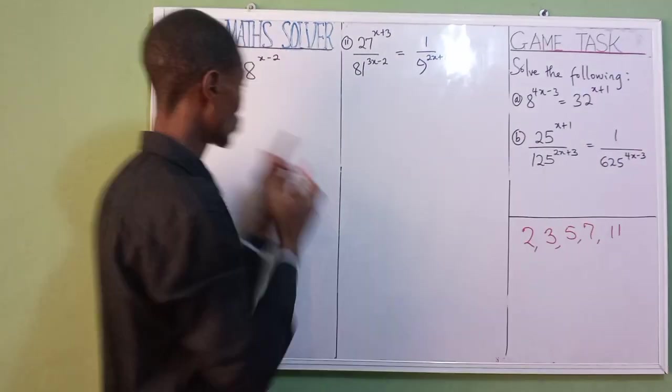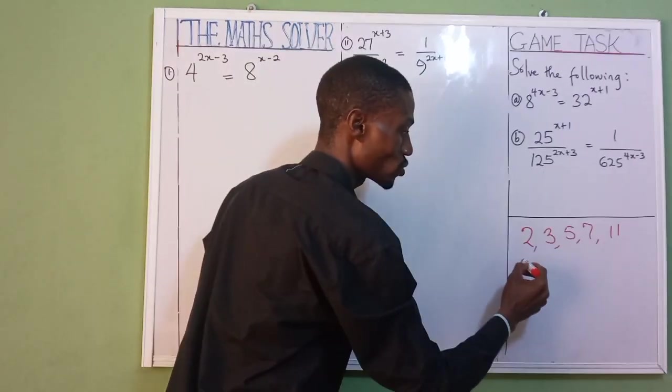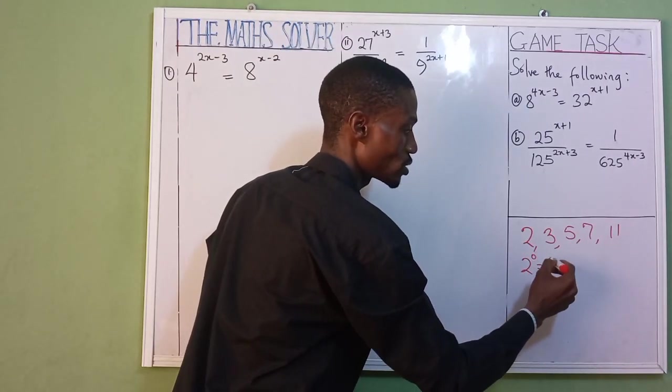By the time you have 2 to the power of 0, it means 1. 2 to the power of 1 is 2. 2 to the power of 2 is 4.